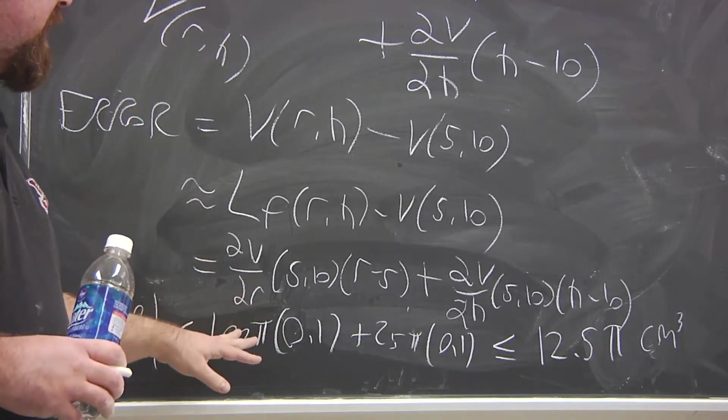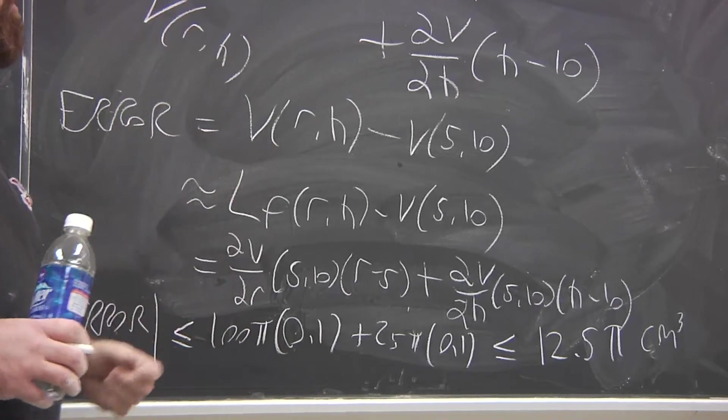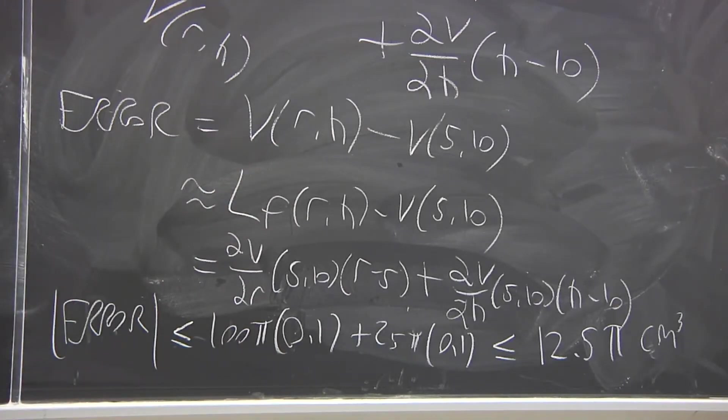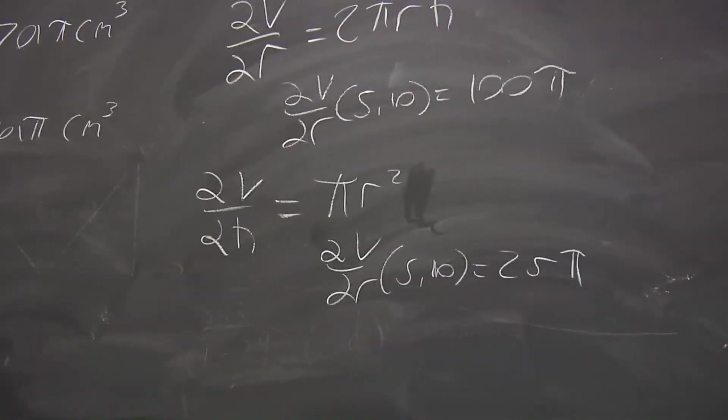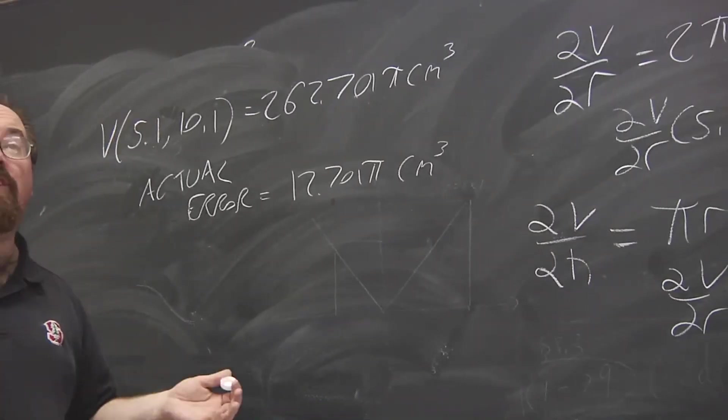So here we're just trying to get a simple bound, which we can get no matter how complicated the original function is. Plus the fact that we only know roughly, we only know the ballpark for how large the error can be in R and H. We could say it can be at most this much.